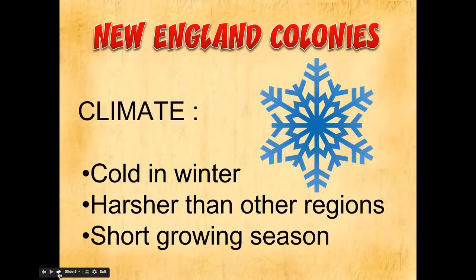As we look at the climate, we have to realize that New England is the furthest north region of the 13 colonies. They have the coldest winters of the three regions — it's going to be a little bit harsher — and they're also going to have a shorter growing season, meaning fewer days in which they can plant crops. That's going to affect the types of crops they're able to grow.